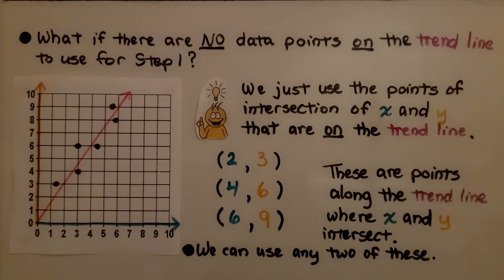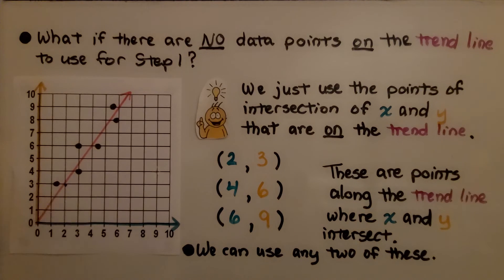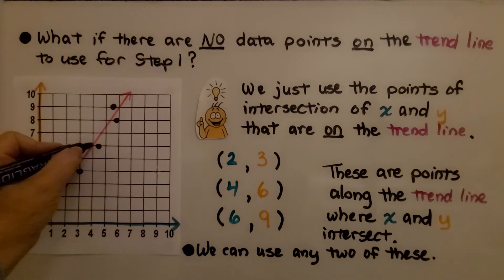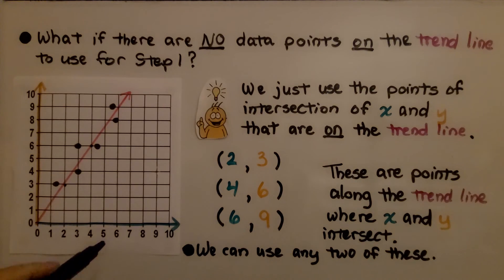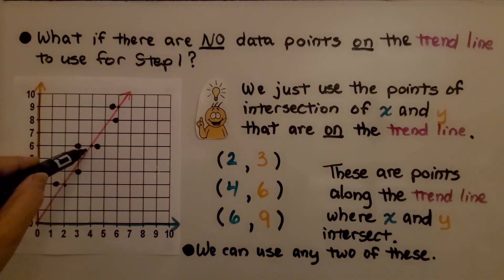But what if there are no data points on the trendline to use for step 1? Here we've got some data points, and none of them are on the trendline. We just use the points of intersection of x and y that are on the trendline. If we look here, we've got one right here at 2 for x, 3 for y. And we've got another one at 4 for x, 6 for y. We've got another one at 6 for x, 9 for y. These are points along the trendline where x and y intersect. We can use any two of these points.